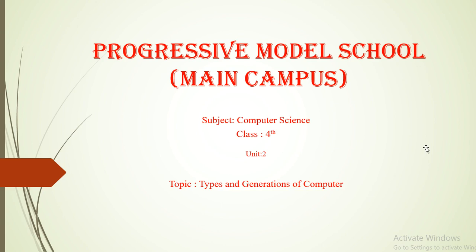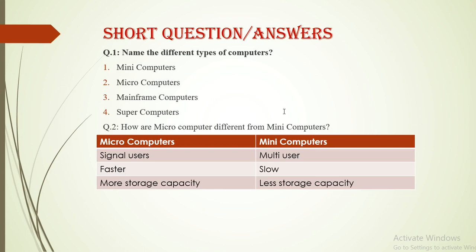First of all guys you have to read your chapter then you will come to your short question answers which I am going to teach you. So question number 1 is name the different types of computers. Answer is minicomputers, microcomputers, mainframe computers and supercomputers.